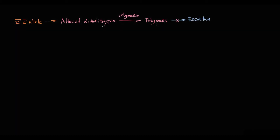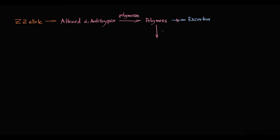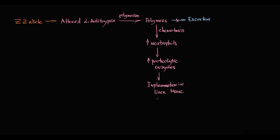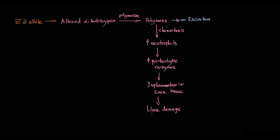These polymerized antitrypsin proteins are strong chemotactic agents for neutrophils, which come into liver tissue and begin to rapidly produce proteolytic enzymes. This causes inflammation in the liver tissue, resulting in severe liver damage. Because alpha-1-antitrypsin production begins right after birth, this progressive accumulation of polymers causes severe liver inflammatory damage since the neonatal period.